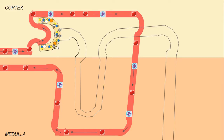We also have chloride ions — sodium and chloride together make salt, but within your body they exist as separate ions. These are all the small particles that get filtered through into the tubule.